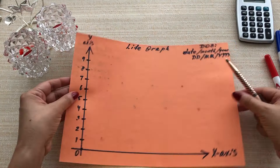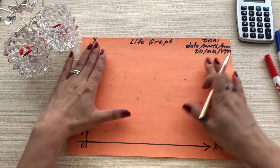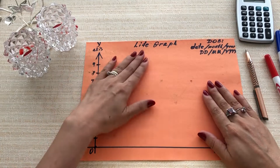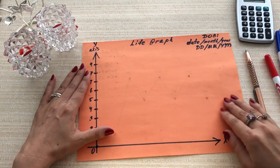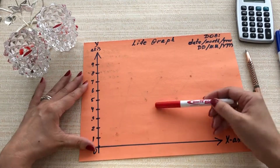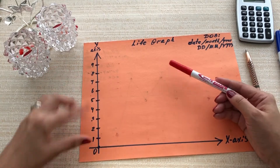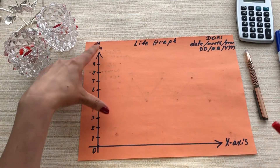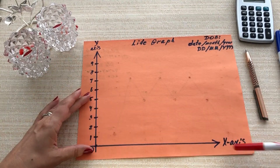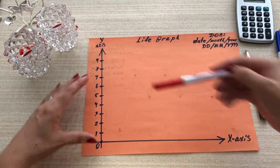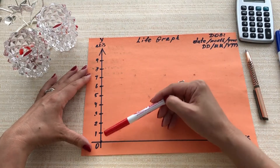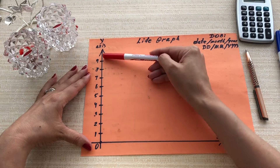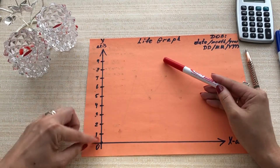First of all, I created a sample to show how we will do it — Life Graph. What we need first: you need to create a coordinate system. You need to draw a y-axis and an x-axis. On the y-axis you have to divide it for 9 — 9 dividers.